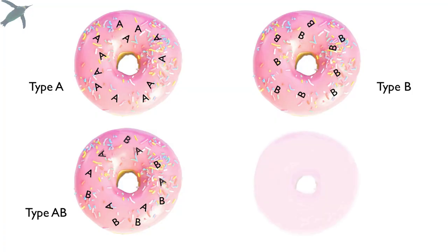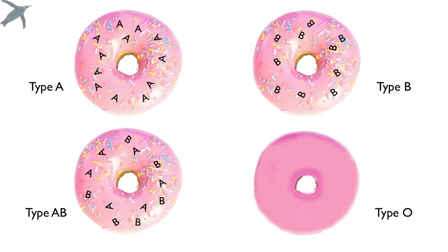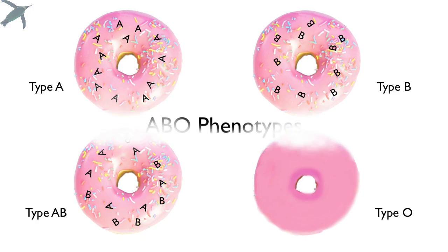And some people don't have any sprinkles at all — they are sprinkle challenged. They are the plain donuts. We call those people type O. That causes some confusion because some people think that there are O sprinkles, but there aren't. Different parts of the world you may actually see this as type 0, which actually makes more sense — no extra sprinkles.